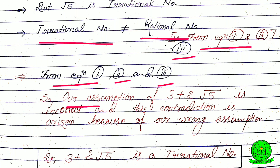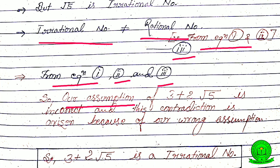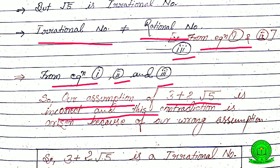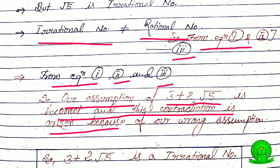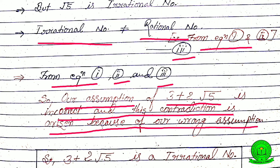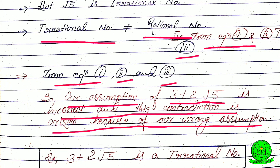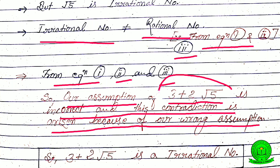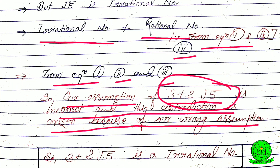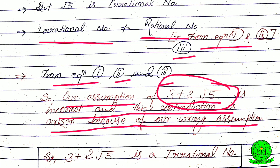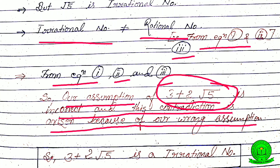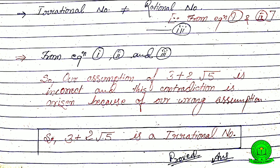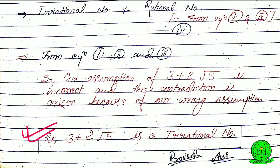From equations 1, 2, and 3, we conclude that our assumption that 3 plus 2 root 5 is a rational number is incorrect. This contradiction arose because of our wrong assumption. Therefore 3 plus 2 root 5 is an irrational number. Proved.